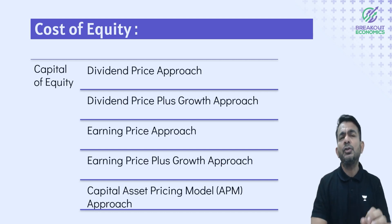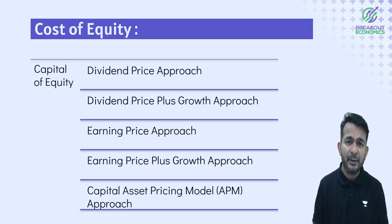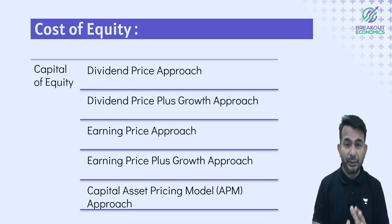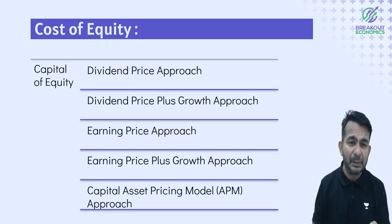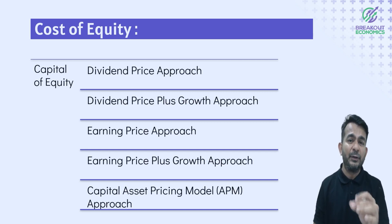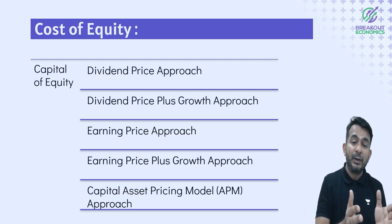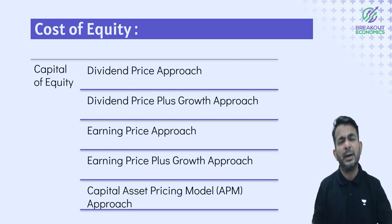Cost of equity is the most complicated concept because equity is given a floating return, not a fixed return. So cost of equity is calculated using the dividend price approach, dividend price plus growth approach, earnings price approach, earnings plus growth approach, or the CAPM model — that is the Capital Asset Pricing Model.